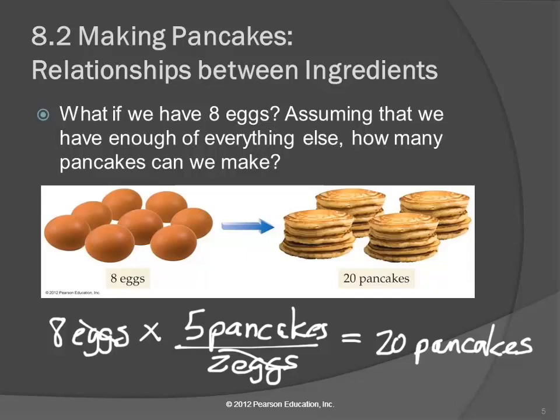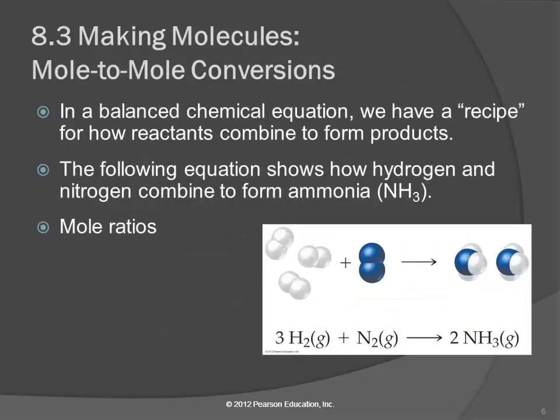This is a conversion factor we got from the recipe. Two eggs yielded five pancakes, which means if we have eight eggs, we can get 20 pancakes.